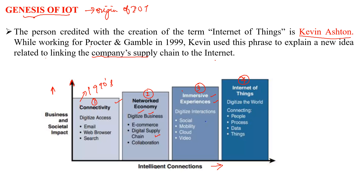The last phase is the internet of things, where you are digitizing the world by connecting people, process, data, and things. This diagram can carry three marks, and the remaining three marks can go for the explanation.